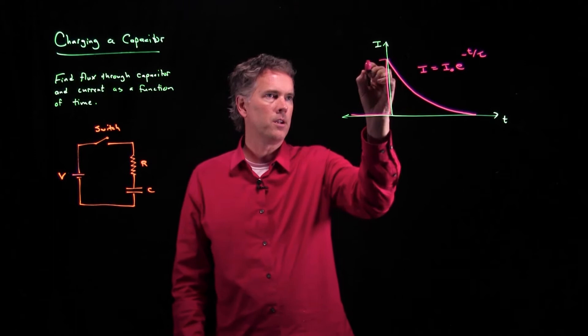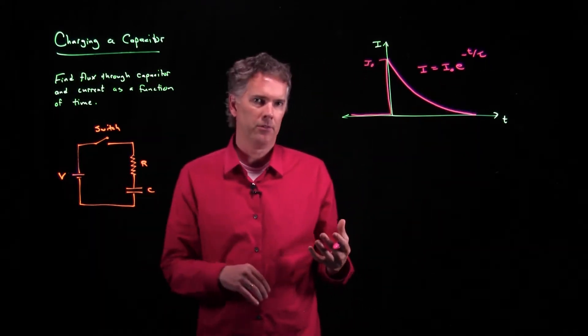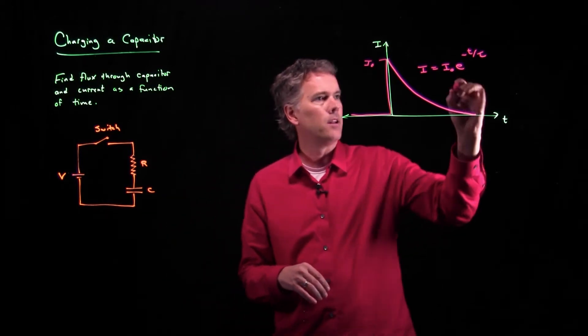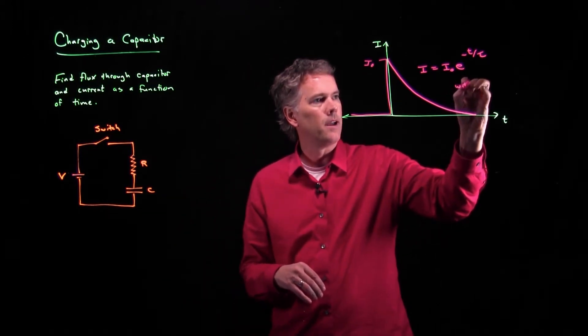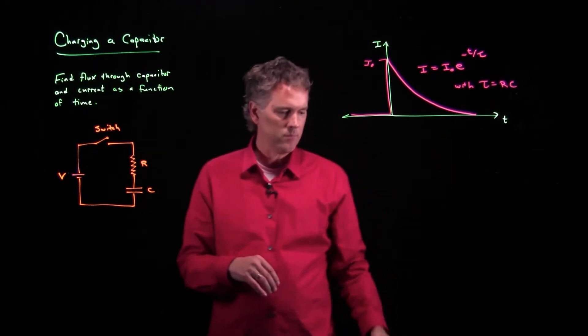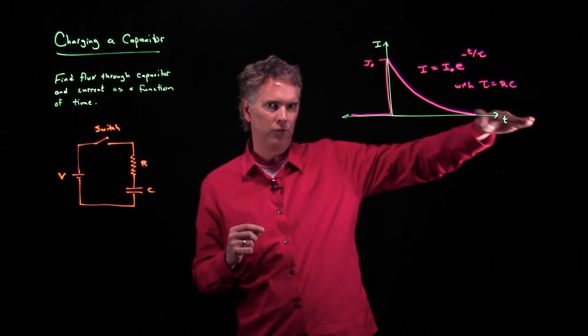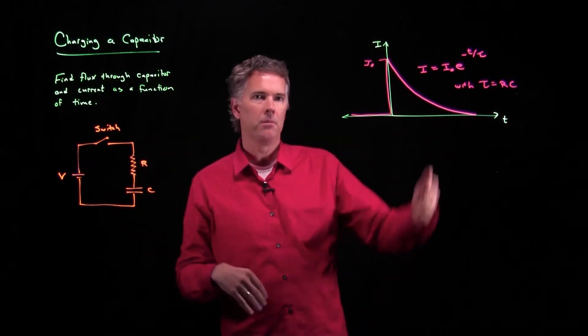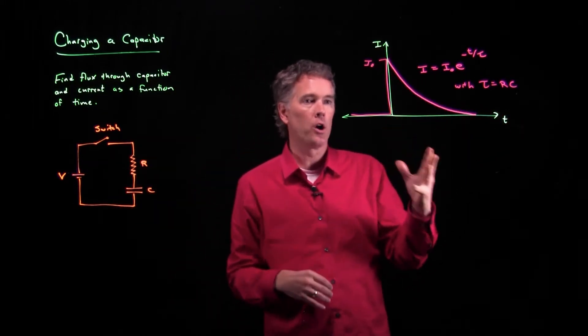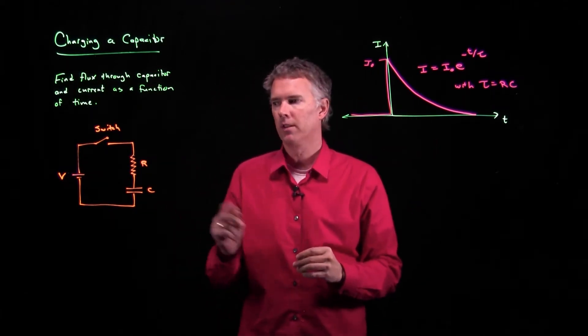This level here is I naught, tau is of course the decay time for this circuit, and that is given by R times C. Big R means that this thing decays slower. Big capacitor means it decays slower. It takes longer to charge up the capacitor. So this is what the curve for current looks like.